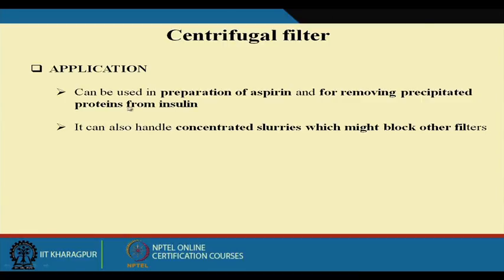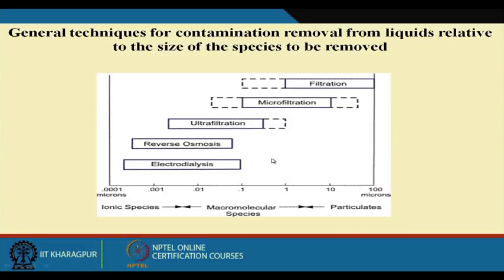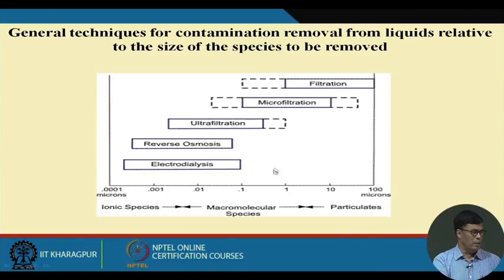The centrifugal filter can be used in the preparation of aspirin in the pharmaceutical industry and for the removal of precipitated protein from insulin. Insulin is a recombinant protein produced through fermentation, and this filter can also handle concentrated slurry which might block other filters. Different filtration techniques exist depending on particle size: filtration for 1 to 100 microns, microfiltration for smaller particles, ultrafiltration for much smaller particles, reverse osmosis for even smaller particles, and electrodialysis for ionic species and macromolecules.